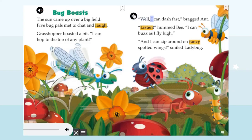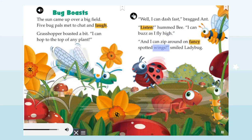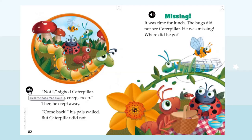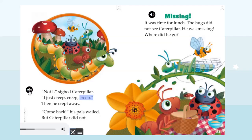'Well, I can dash fast,' bragged Ant. 'Listen,' hummed Bee, 'I can buzz as I fly high.' 'And I can zip around on fancy spotted wings,' smiled Ladybug. 'Not I,' sighed Caterpillar, 'I just creep, creep, creep.' Then he crept away. 'Come back!' his pals wailed, but Caterpillar did not.